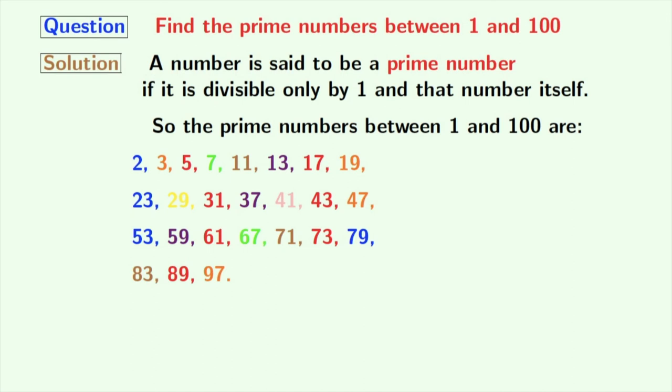So, there are 25 prime numbers between 1 and 100.